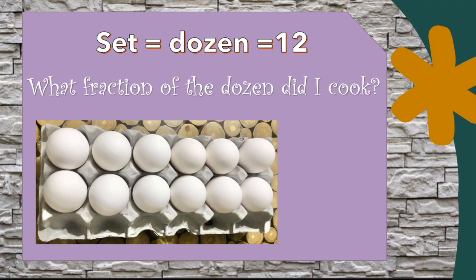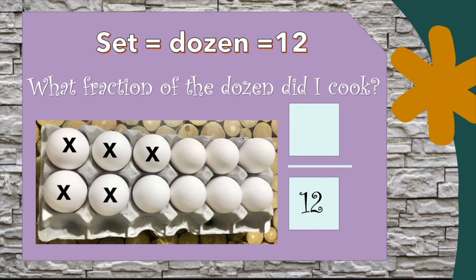Let's start writing our fraction. The total number of eggs in the dozen would be our denominator. As we said, in a dozen there are 12 total pieces. We still need our numerator. Our numerator is the number of eggs that I cooked. There's five of us and each of us wanted an egg, so there's a total of five eggs that I cooked: one, two, three, four, five. Five goes on top, and five is our numerator.